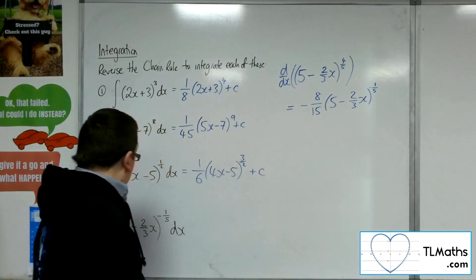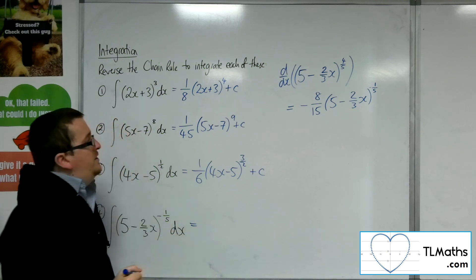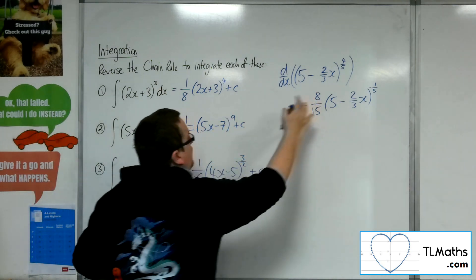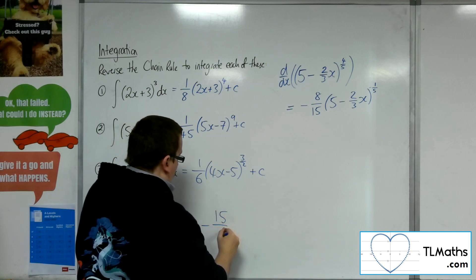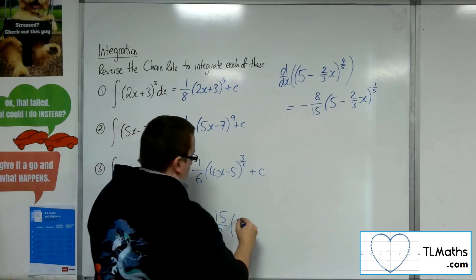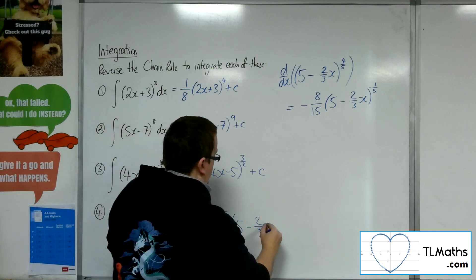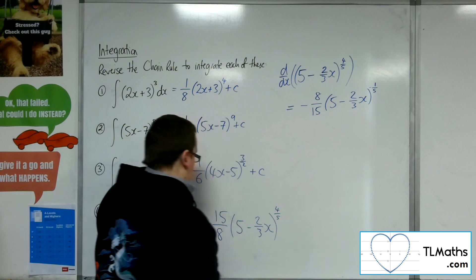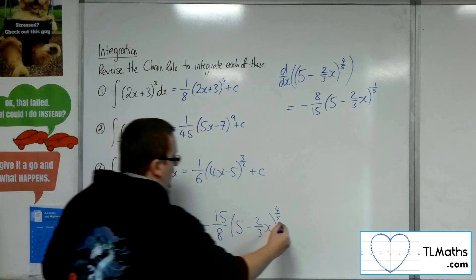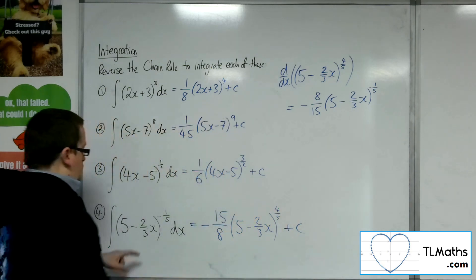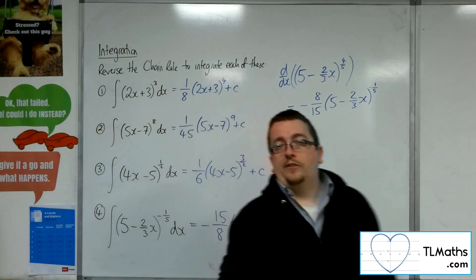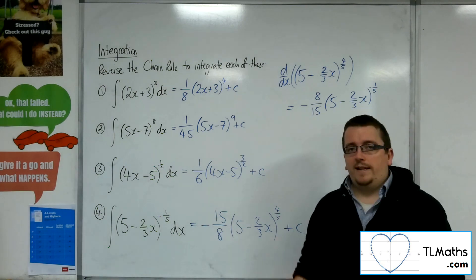So this should integrate to 1 over this amount. So negative 15 over 8, 5 minus 2 thirds x to the power of 4 fifths, plus C, because that will differentiate back to that. And that's how we can use reversing the chain rule to quickly integrate these.